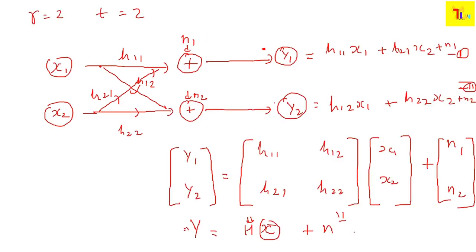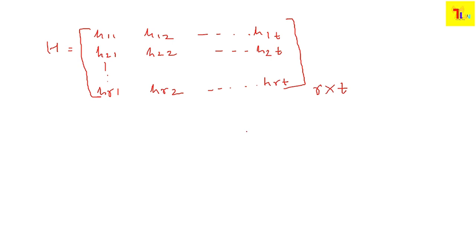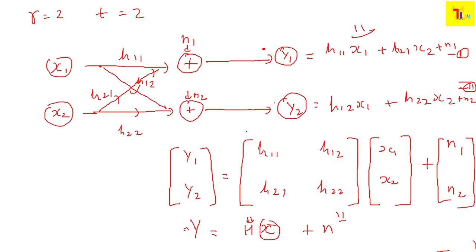Verifying with the 2×2 matrix example: if you do the matrix multiplication, this row times this column gives h11·x1 + h12·x2 = y1. So we have simply represented this set of equations in matrix form. If R equals T we can directly find x = H⁻¹·y.